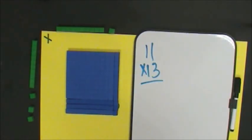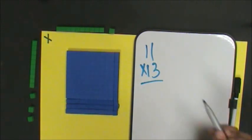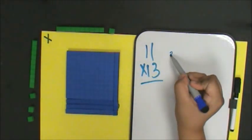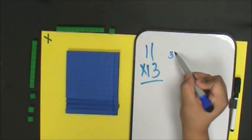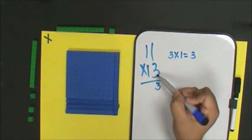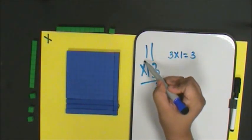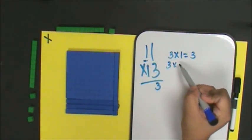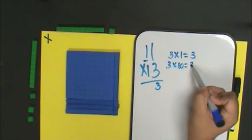Next, let's multiply by finding the partial products. 3 ones times 11 is 3. 3 ones times 10 is 30.